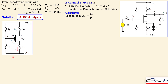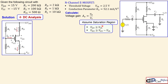Since the gate current is zero, we work towards the drain current and other parameters. We first assume saturation region of operation, which requires that VGS ≥ VT and that VDS ≥ VGS − VT, which is the overdrive voltage.